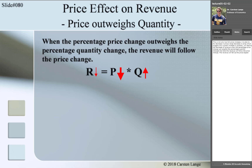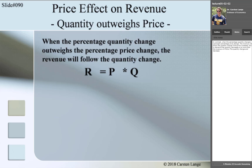In contrast, when the percentage quantity change outweighs the percentage price change, the revenue will follow the quantity change. If the price increases but the demanded quantity decreases a lot more, then revenue will follow the quantity change and decrease. This is also true for a price decrease: if the price decreases but as a result the quantity increases a lot, the revenue will increase. In that case, quantity and revenue both increased.